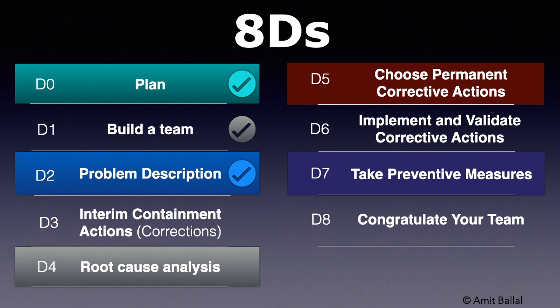At the end of this video, you'll be able to identify actions needed to contain a problem temporarily and will also be able to document these actions in an 8D format. The purpose of the ICA — interim containment action or correction — is to stop the occurrence of the same problem and prevent its passing to the customer end by taking precautionary measures.